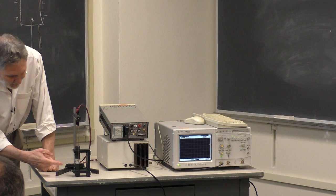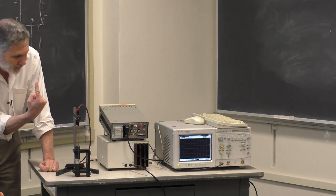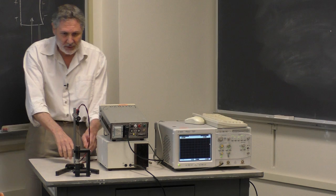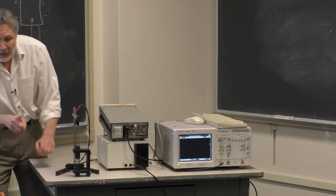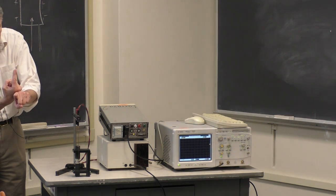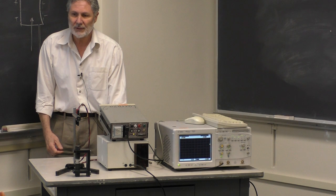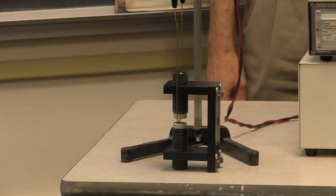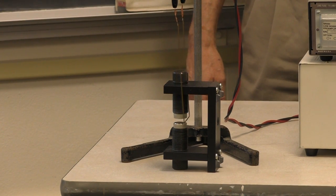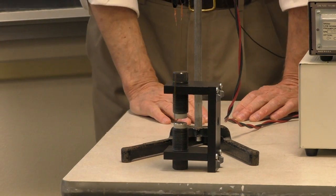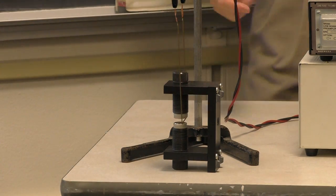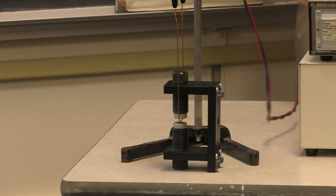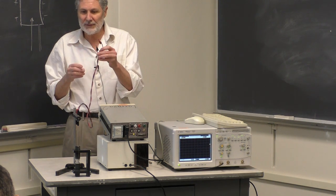In the demonstration: here are the pole faces of a magnet — north pole, south pole, field pointing this way. When I pass a DC current through the rod, the rod kicks outward due to the magnetic force F = IL×B. I turn it off and it oscillates, damping out. Reversing the current makes it go the other way.